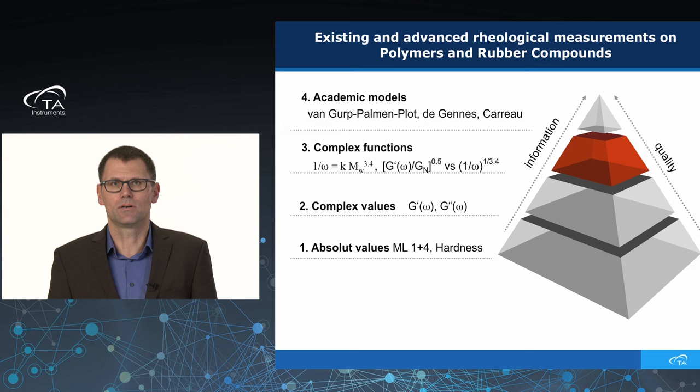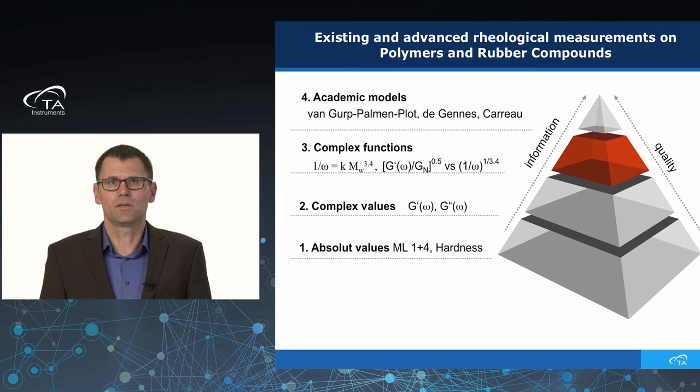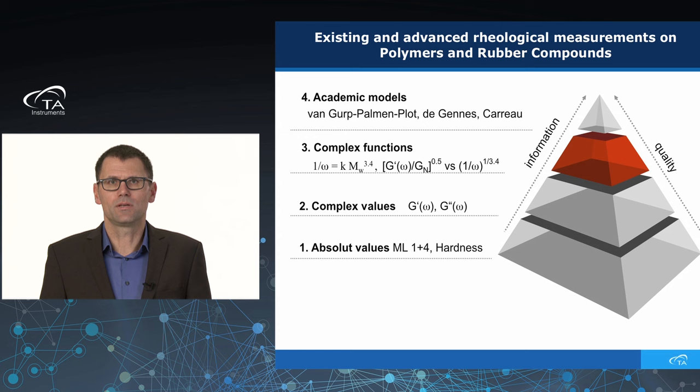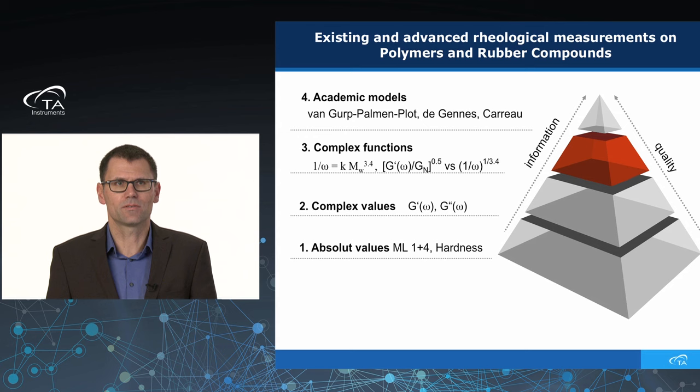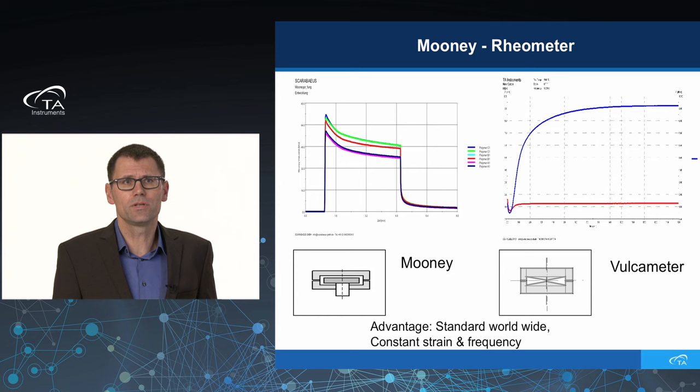The third step is measuring complex functions, and that is what we want to go into a little bit more in detail today. The fourth step is the academic models, which are mainly done at universities to develop new and advanced systems. But today, I want to focus more on that third level of complex functions.